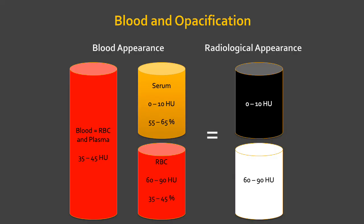Let's look at types of bleeds, but first we need to understand how blood appears in terms of density in Hounsfield units and its relative radiological appearance. Whole blood, which includes red blood cells and plasma, ranges between 35 to 45 Hounsfield units.